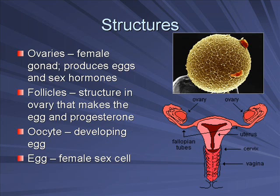A follicle is a structure in an ovary that actually makes the egg. Inside a follicle is where an egg matures and gets ready. It also produces progesterone, one of the key female reproductive system hormones.